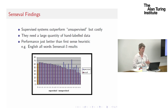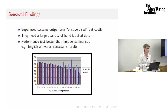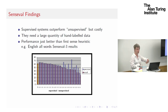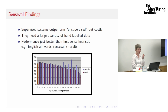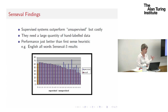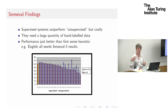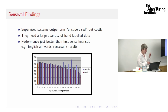Aside from the sense inventory issue, there were other concerns. Supervised systems — given hand-labelled training data — were doing much better than unsupervised systems. But they needed a large amount of hand-labelled data, which is very costly to produce. It takes a lot of money to get people to produce it, and there are always new types of data, new types of text — finance, biomedical — and meaning changes. So it's a costly enterprise.